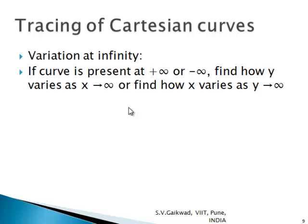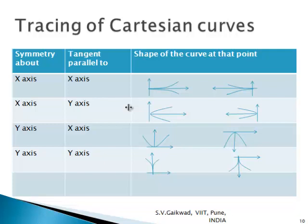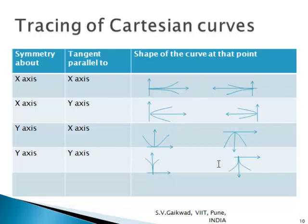Even after finding all properties you may not be able to visualize the curve, so this table may help. At any key point — origin or intercept — if the symmetry is about the x-axis and tangents are parallel to the x-axis, the shape is a cusp. If symmetry is about the x-axis and tangents are parallel to the y-axis, the shape is parabolic, opening upward or downward. If symmetry is about the y-axis and tangents are parallel to the y-axis, the shape is again a cusp, direction depending on the region of absence.